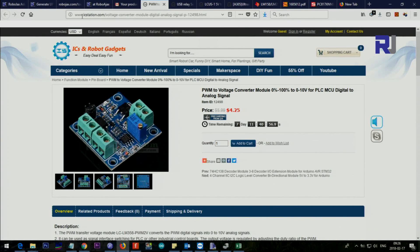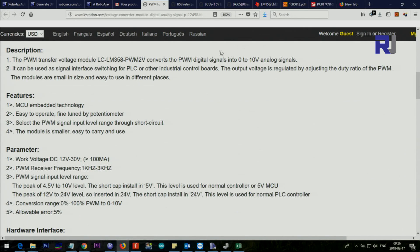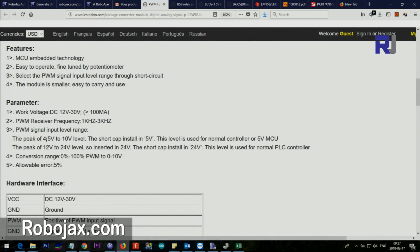This is icstation.com and this is the product page. This device can give us an output of 0 to 10 volts and the input voltage that operates is 12 to 30 volts, less than 100 milliampere. Pulse width modulation frequency can be between 1 to 3 kilohertz and it has two settings with a jumper wire. The pulse width modulation level can be either between 4.5 to 10 volts, or we have another jumper that you can set it between 12 to 24 volts. The conversion is from 0 to 100 percent will be reflected to 0 to 10 volts with 5 percent error.